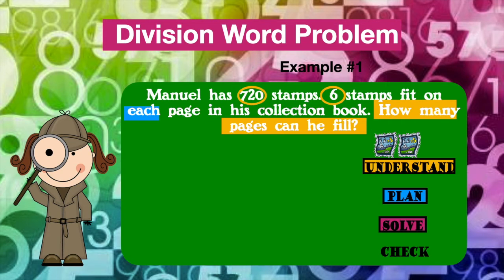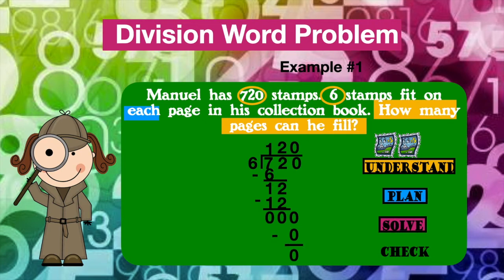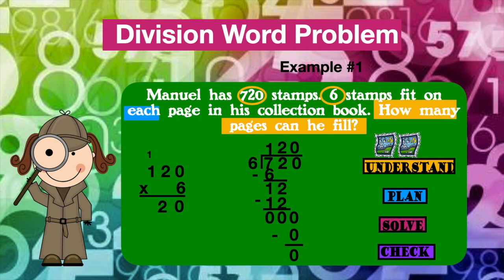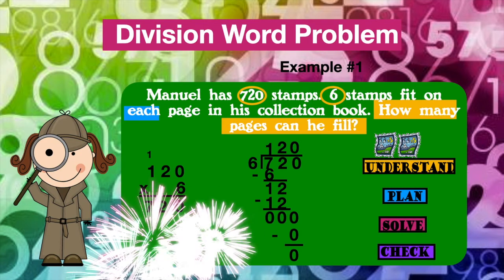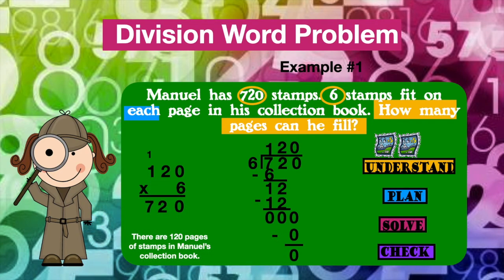Now it's time to solve. Set up your problem. Remember, 720 is your dividend and six is your divisor. Let's start dividing. Once we are done, it's time to check. To check a division problem, we use multiplication. We will know we are correct if our end product is the dividend in our division problem. Let's multiply. We were correct — there are 120 pages of stamps in Manuel's collection book. Good job, guys.